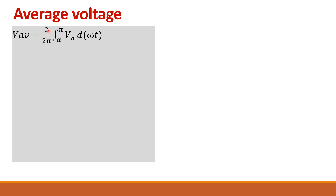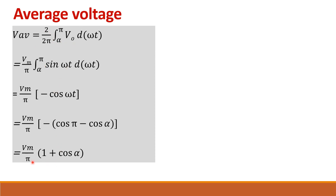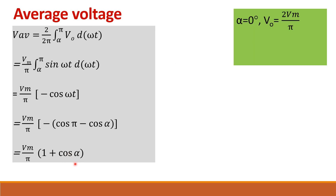To calculate average output voltage: V_average equals (1/2pi) times the integral from alpha to pi of Vm·sin(omega·t), multiplied by 2 because there are two output pulses per cycle. Simplifying this gives the average output voltage equation. Substituting alpha equal to zero gives the maximum value.